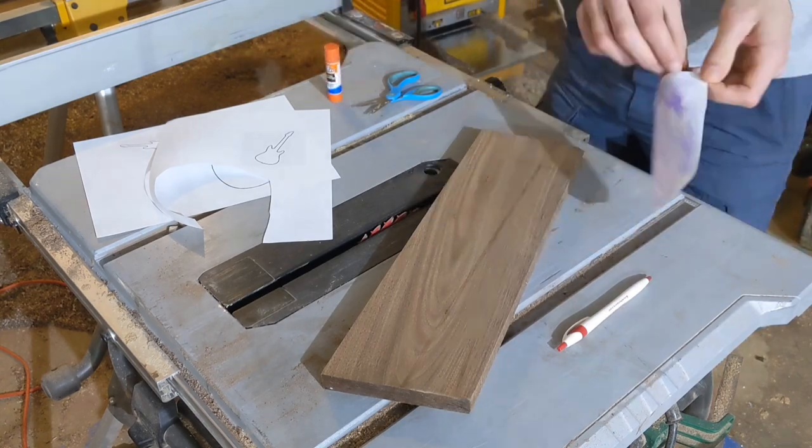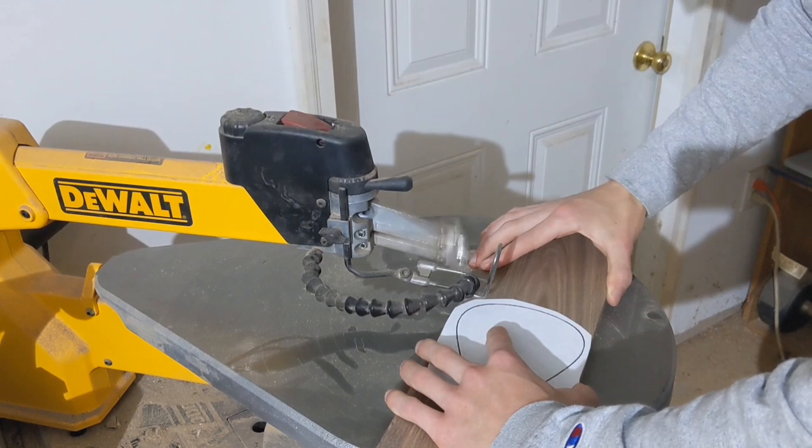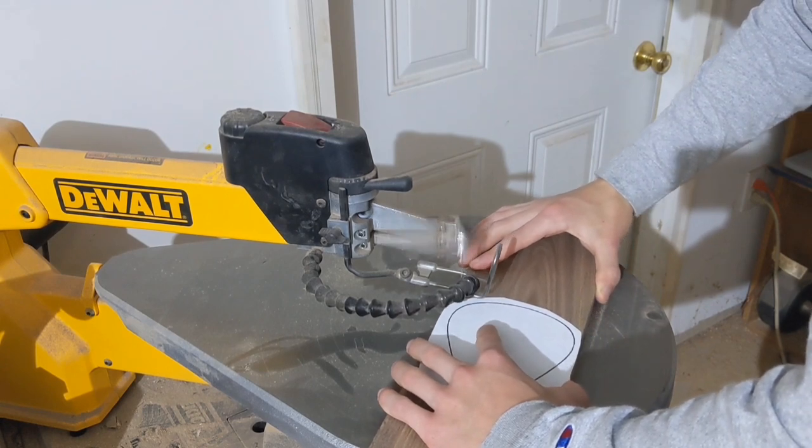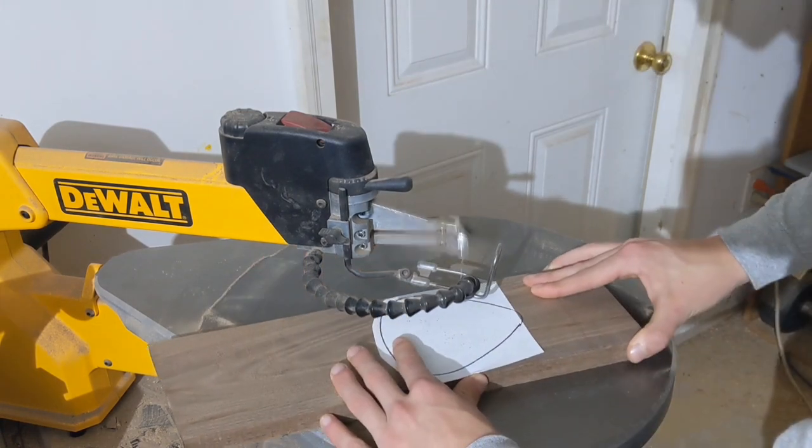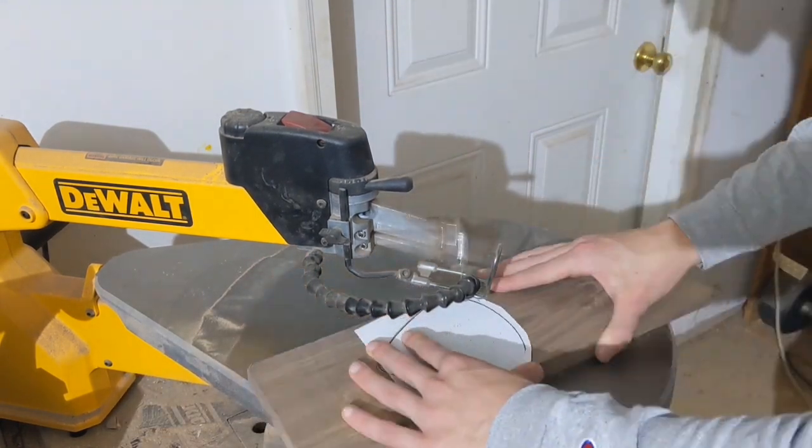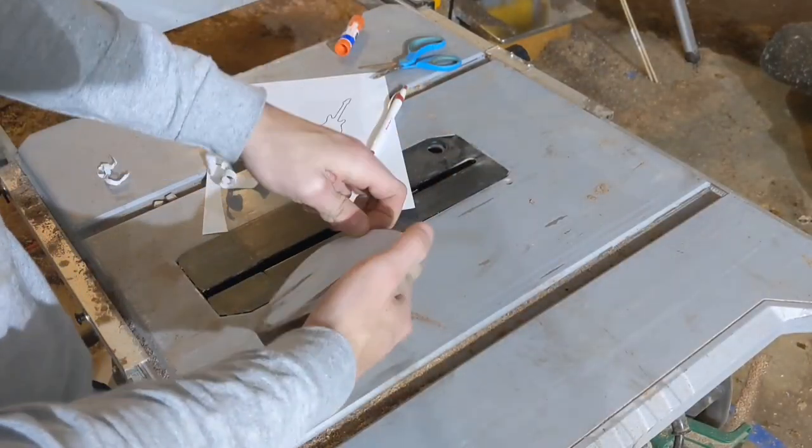I started by printing out an oversized guitar pick and gluing it to a piece of wood in order to cut it out on the scroll saw. Why a guitar pick, you might ask? Because the recipient of this gift, Kelvin, is big into playing guitar, so it was only appropriate to give him a guitar-themed phone charging stand for his birthday.